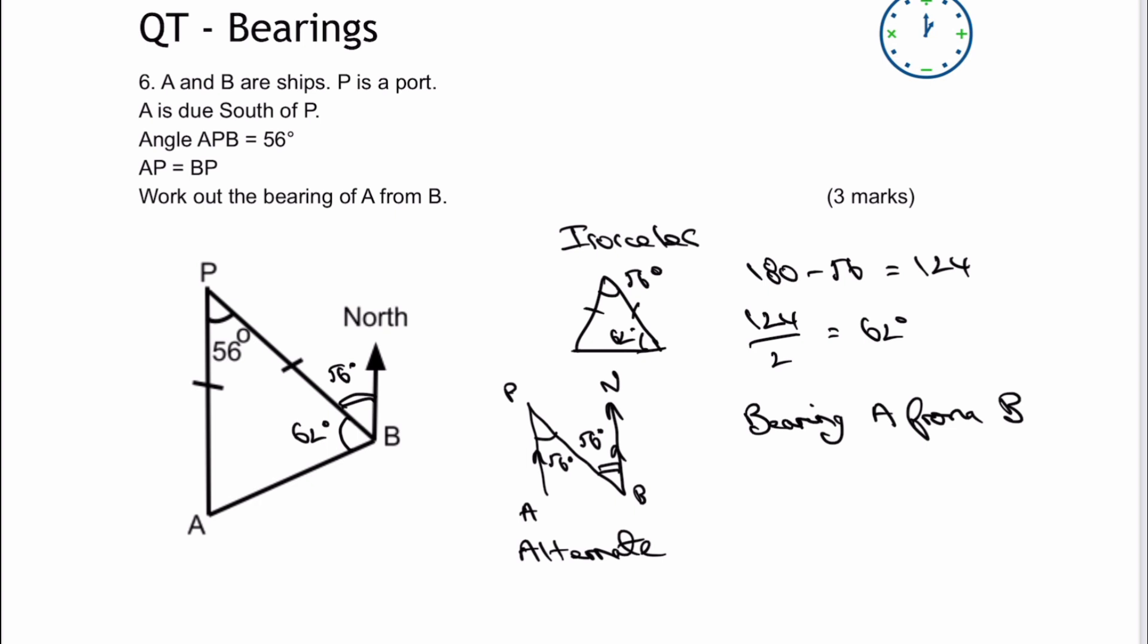I'm going to say, well, the angles around a point are going to be in total 360 degrees, but I'm interested in this bearing here. So it's going to be 360, take away 56, take away 62, and that's going to give us an answer of 242 degrees.